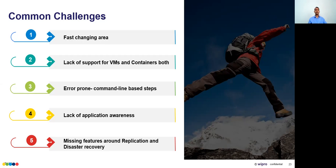Second common challenge: lack of support for both VMs and containers. Very few solutions support both, and very few companies want to maintain two separate storage solutions — one for Kubernetes and one for traditional virtual machines. Third: error-prone command-line-based setup — you don't want to manage everything via CLI or build your own automation just to make it production-ready.